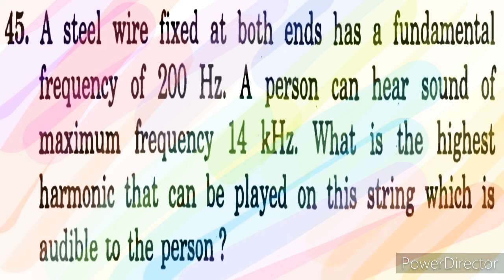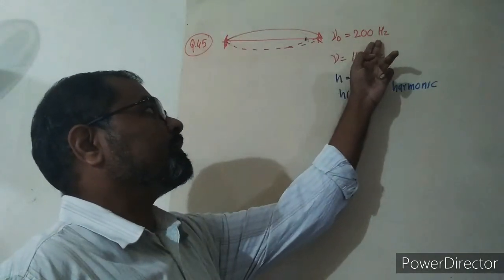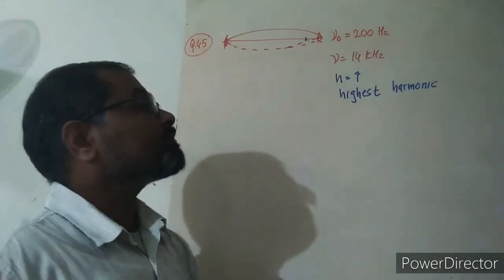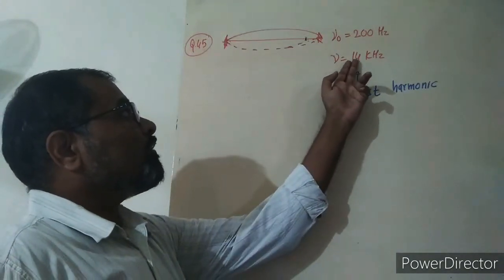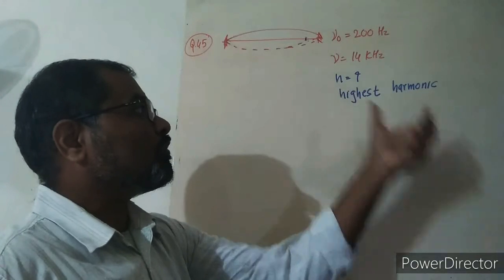What is the highest harmonic that can be played on this string which is audible to the person? So here is a string with a fundamental frequency of 200 Hertz and a person who hears up to 14 kilohertz. This is the maximum frequency when the sound is audible.